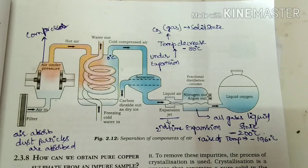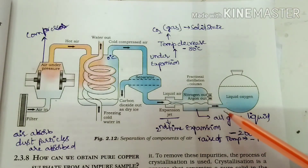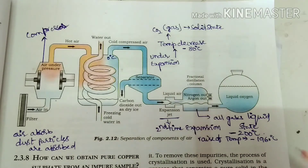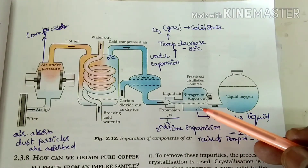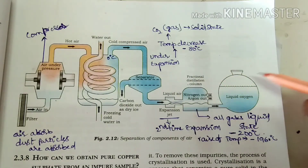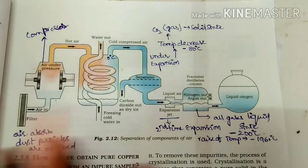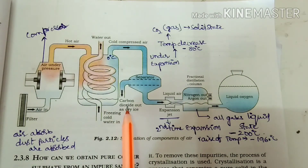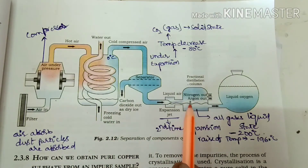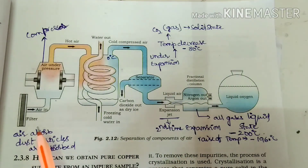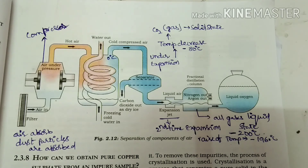We stop the process of fractional distillation when the temperature reaches minus 183 degrees Celsius, because the boiling point of oxygen is minus 183 degrees Celsius. The total oxygen is in liquid form and liquid oxygen is separated. In this total process: at the first stage we separated carbon dioxide from air; in the second stage we collected nitrogen, then argon, then oxygen. By using the method of fractional distillation, we separate the different components from air because the differences in boiling points are very small. Thank you.